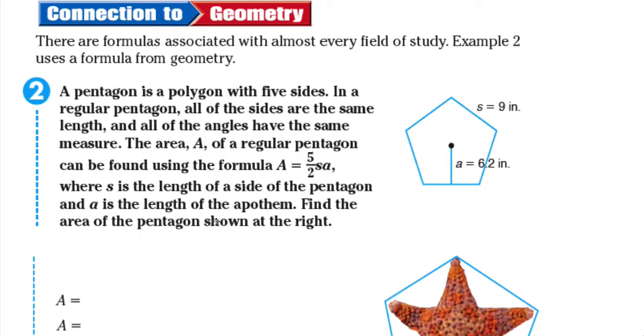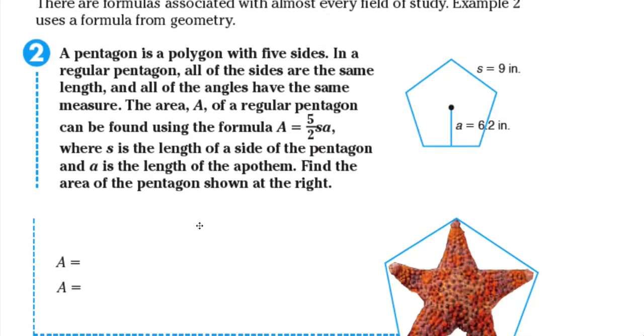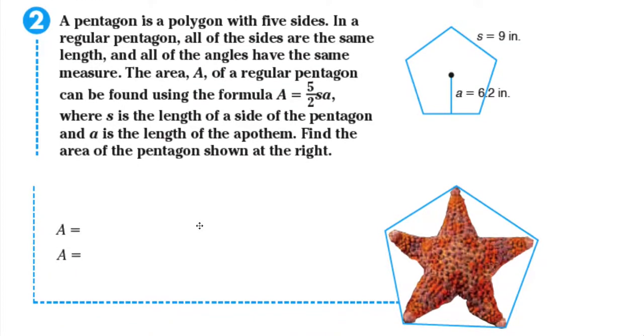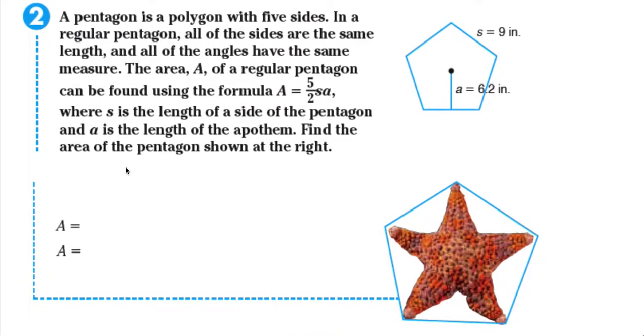So you are given this formula A equals five halves s times a. S represents the side and a represents the apothem of the pentagon. So don't worry about that, we don't need to know the meaning for now. Just concentrate on what the formula is. Substitute the value of s which is nine and six point two for a.